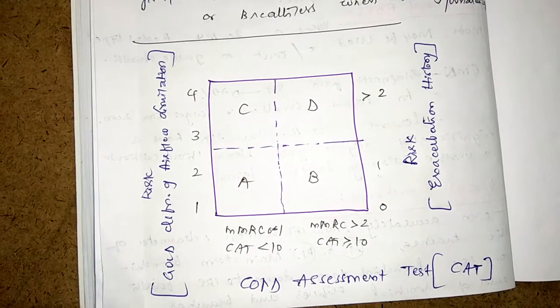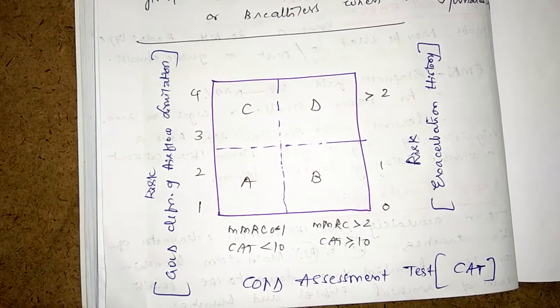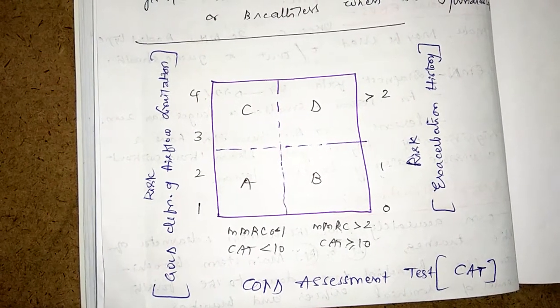So, the CAT score will be less than 10 in A and C and more than or equal to 10 in B and D.